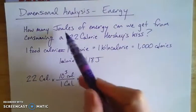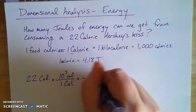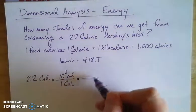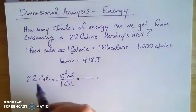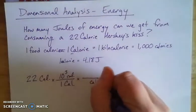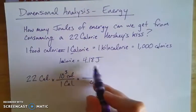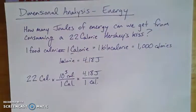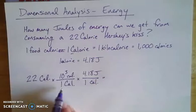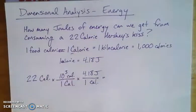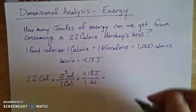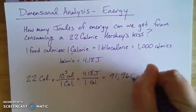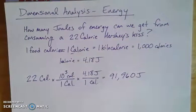That's useful because I'm looking for joules of energy. What I ultimately want is joules at the end of my series of conversion factors — joules on that last numerator. So I can go from big-C calories to little-c calories. I need something relating my little-c calories to joules: one calorie is 4.18 joules. Now my little-c calories divide out, I'm left with an answer in joules. Plugging this into my calculator gives 91,960 joules.